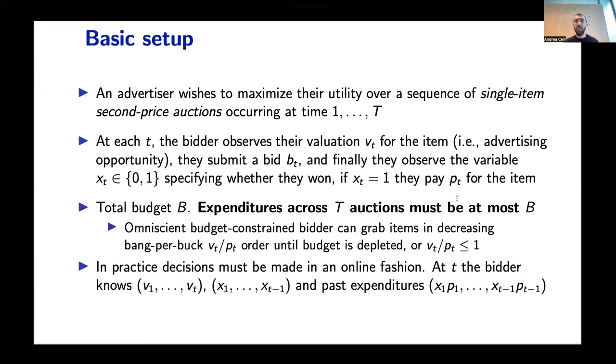After placing this bid, they observe the allocation xt, which is a variable equal to one if they won and zero otherwise. If they won the item, they also observe a price pt that they have to pay. The challenging thing here is that we have a total budget B, and across the whole duration of the campaign we don't want to spend more than this budget.